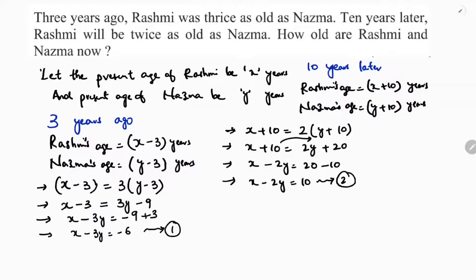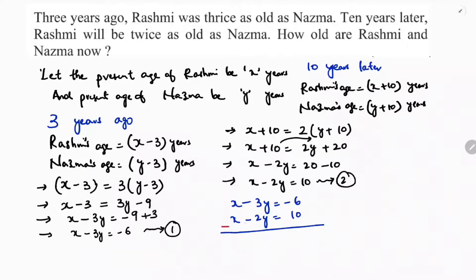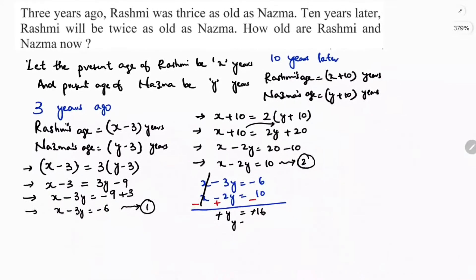Now I need to solve equation 1 and equation 2. Equation 1: X minus 3Y equals minus 6. Equation 2: X minus 2Y equals 10. Since the coefficients of X are equal, I will subtract equation 2 from equation 1. X minus X cancels. Minus 3Y plus 2Y is minus Y. Minus 6 minus 10 is minus 16. So Y equals 16. Nizma's age is 16.